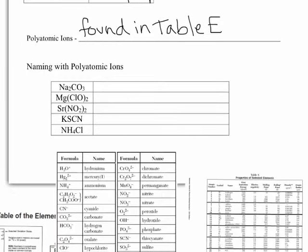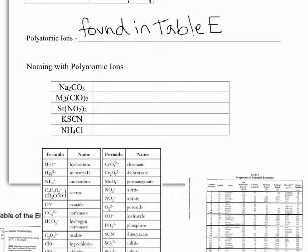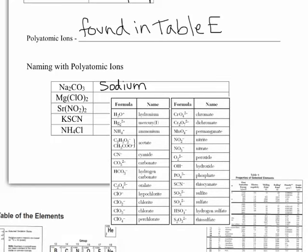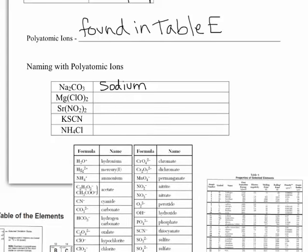Let's try naming some of these. The rules aren't going to be that different from what you did earlier in naming. We're going to first name the first part of our compound. In this case, Na is sodium. Then because I identified right away that there were three or more elements in there, I know there's a polyatomic ion in there somewhere. I'm going to be looking for CO3 in table E. Here it is — you want to make sure all of the subscripts are the same. The one we're going to be naming is carbonate. So this is sodium carbonate.